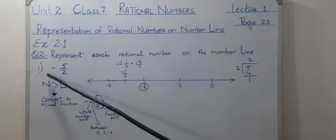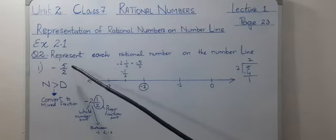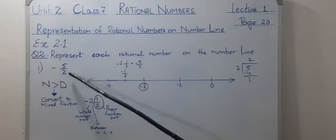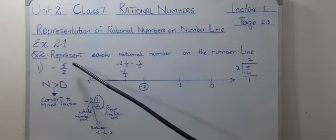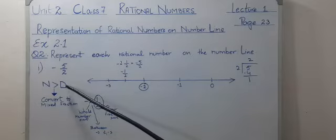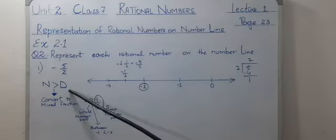So, first part, minus 5 by 2. This is an improper fraction. When numerator is greater than denominator, it's an improper fraction.